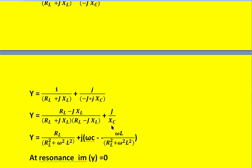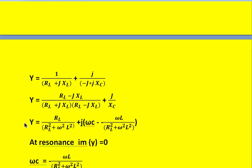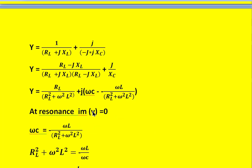Y equals the real part plus 1 divided by X_C in the imaginary part. After full simplification, Y becomes R_L divided by (R_L squared plus ω²·L²), plus j times (ω·C minus ω·L divided by R_L squared plus ω²·L²). At the resonance condition, the imaginary part of the admittance is equal to zero, meaning this j term becomes zero.